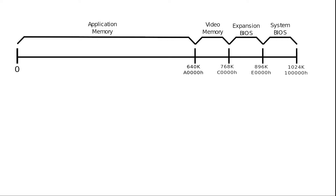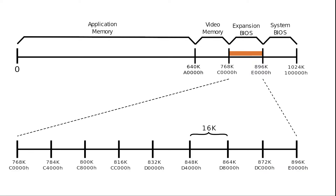Remember how I told in the last video that the BIOS ROMs are all accessible in the memory address between 768 and 896 KB? Just to recap: from the XT times, the architecture allowed to use almost the complete first 640 KB of memory for applications. The 128 KB addressed between 640 KB and 768 KB were reserved for video memory, and the next 128 KB were available for expansion ROMs, like IDE BIOS, video BIOS, network BIOS, or things like XT IDE.